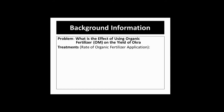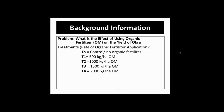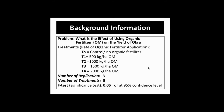We have to specify the treatments in this experimental design. We have five treatments: Treatment 0 or control — no organic fertilizer used; Treatment 1, 500 kg per hectare; Treatment 2, 1000; Treatment 3, 1500; and Treatment 4, 2000 kg per hectare organic fertilizer application. We'll be using three replicates and a 0.05 critical level for the F-test, or 95% confidence level.